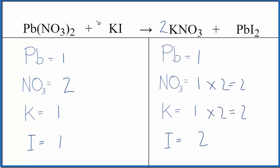But it looks like all we need to do is put a two in front of the KI, because one times two, that'll balance the potassium atoms, and one iodine times two. Those are balanced. We're done. This equation is balanced.